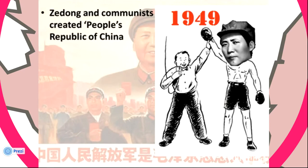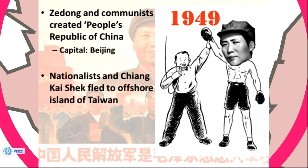They set up the capital of their government in the city of Beijing. The Nationalists, who had lost under Chiang Kai-shek, fled to the offshore island of Taiwan, where they set up a competing government called the Republic of China, with its capital at Taipei.